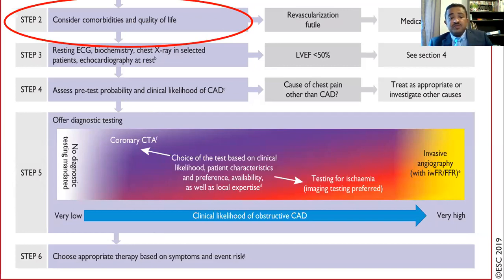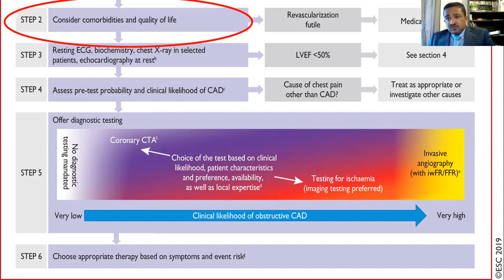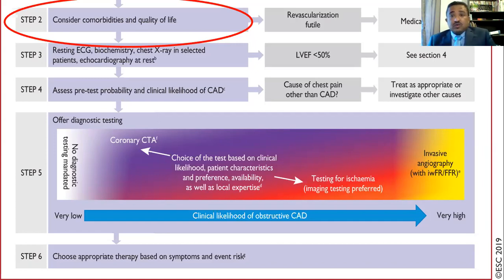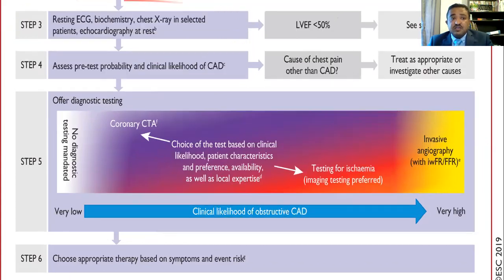Going back to our patient, he clearly has stable angina — which we now call chronic coronary syndrome — with atypical cardiac-sounding chest pain. The second step is to consider comorbidities and general health. You need a detailed history to decide about revascularization. If the patient has a good quality of life, he should be considered for revascularization. If quality of life is poor with many comorbidities, you could start general medication even without a full diagnostic workup. Our patient is very independent with a good quality of life and should be considered for revascularization if needed.